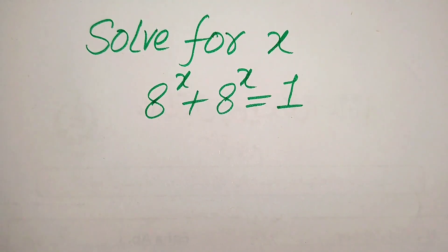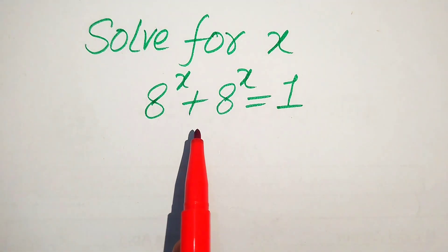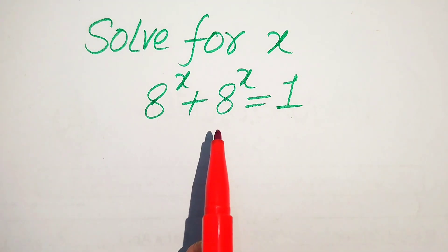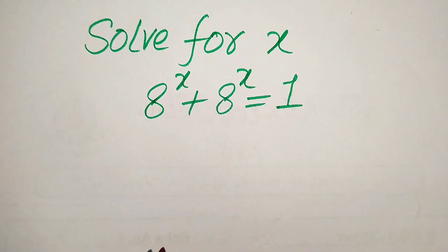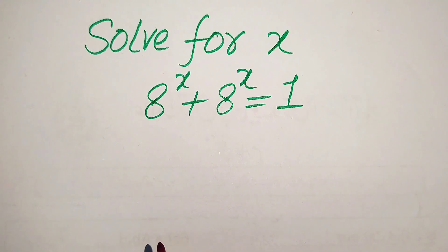Hello everyone. How to solve this problem for the values of x: if we have 8 to the power of x plus 8 to the power of x equals 1, and we solve this problem for the values of x. Here we solve this problem using two methods. If you have any other method in mind, please don't hesitate to write it in the comment section.